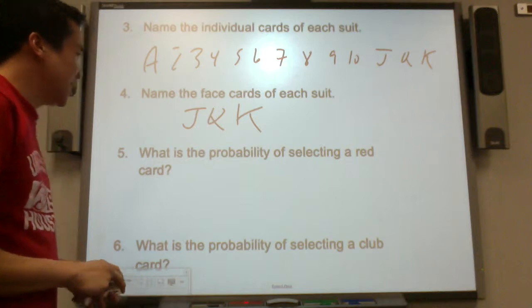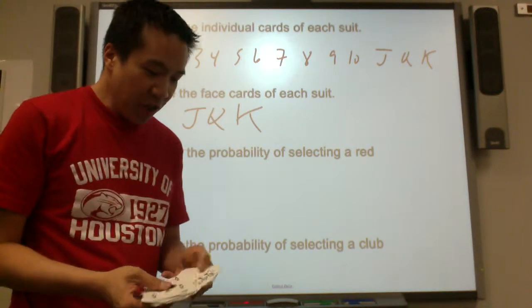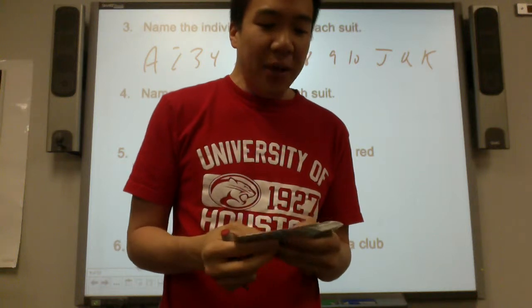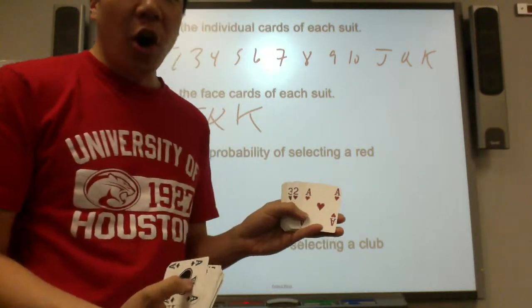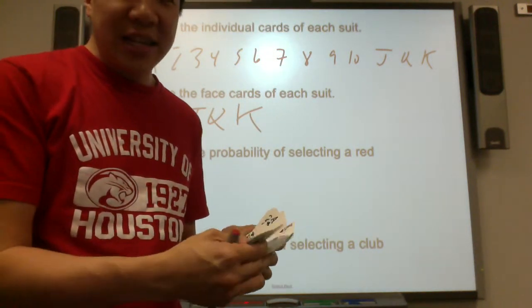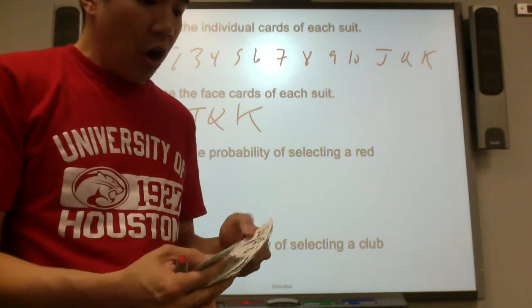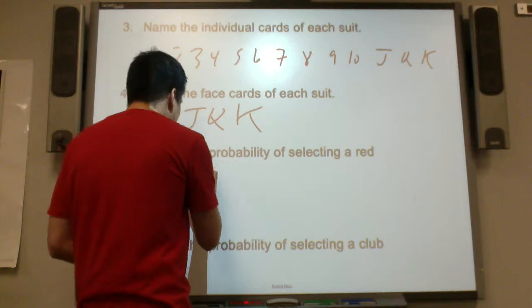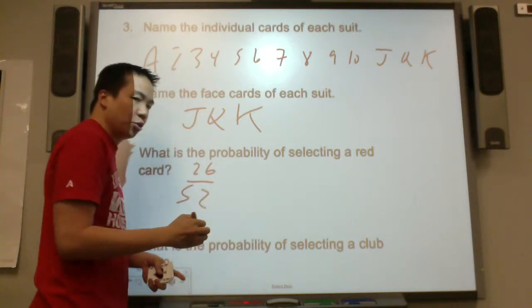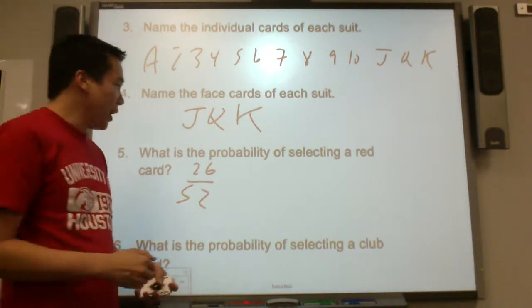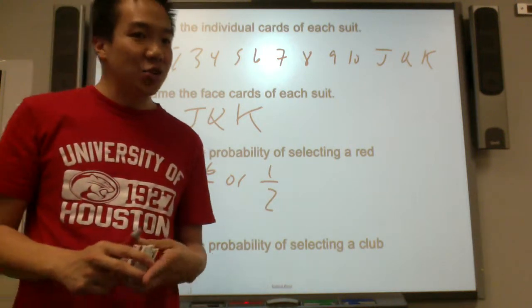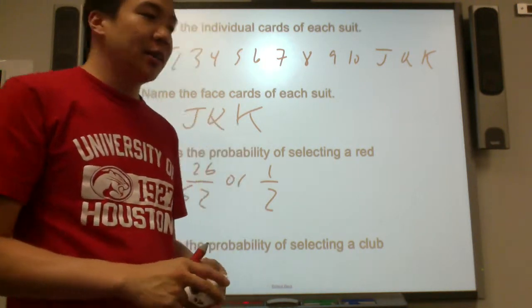What is the probability of selecting a red card? So in this stack, there are 52 playing cards. How many red cards are there? Well, all the hearts are red. There are 13 red cards here. All the diamonds are red. There are 13 here. So 26 out of 52 cards are red. Did you know that's the same thing as saying half of the deck is red? Half of the deck is black.